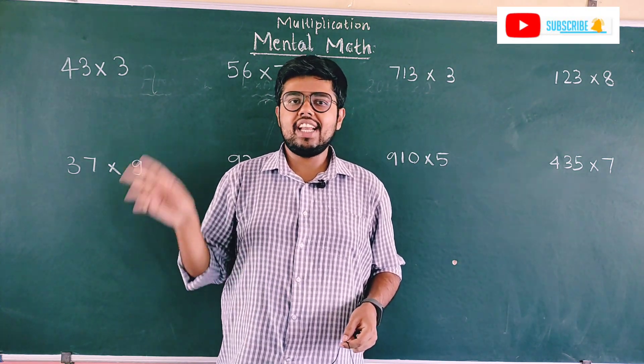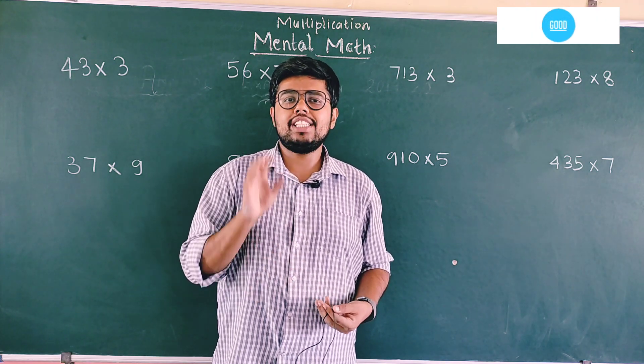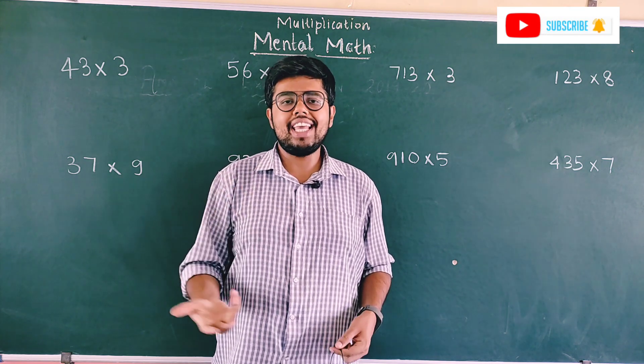Multiplication is impossible without understanding tables. You should know the tables at least from 1 to 10—that's a must. And of course, from 11 to 20 is again a must for your higher classes.